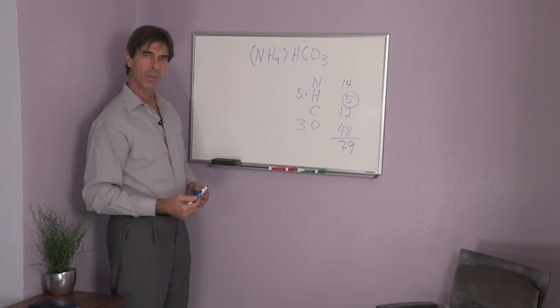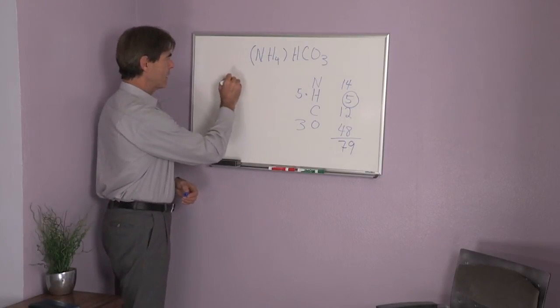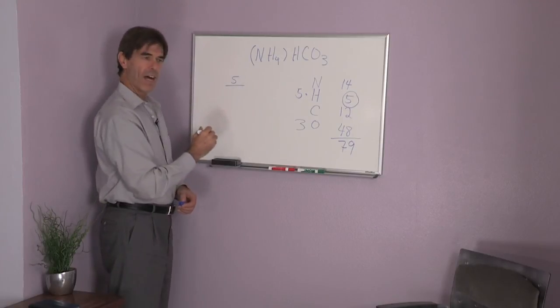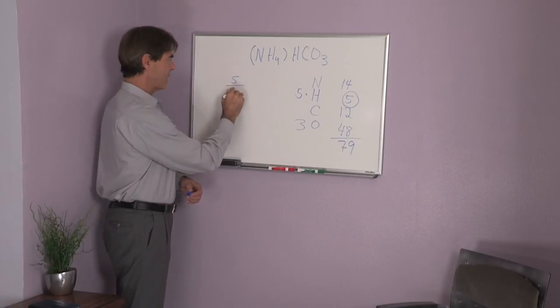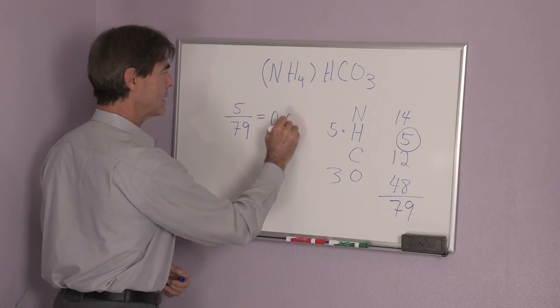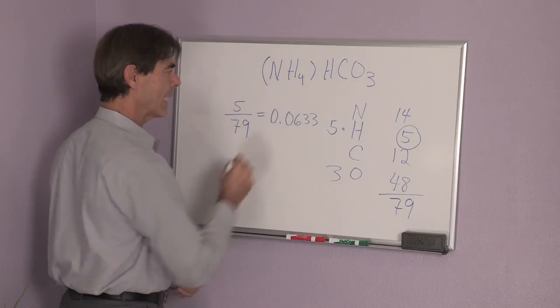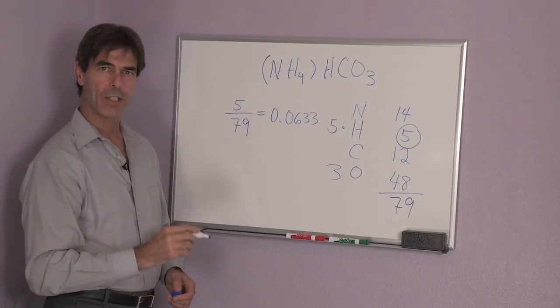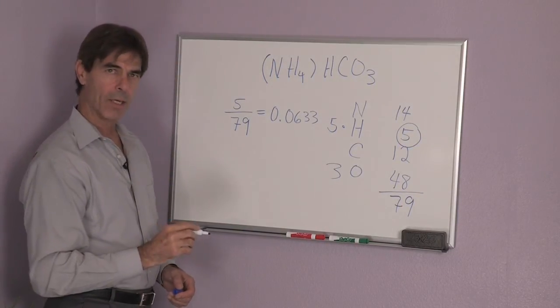So to calculate the mass percentage of hydrogen, we divide 5 by 79, which equals 0.0633. This is the mass fraction of hydrogen in ammonium bicarbonate.